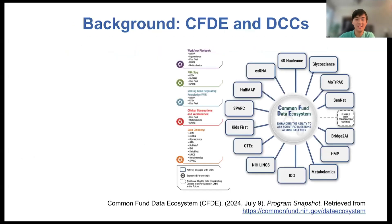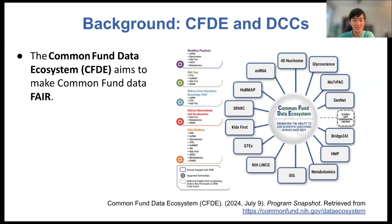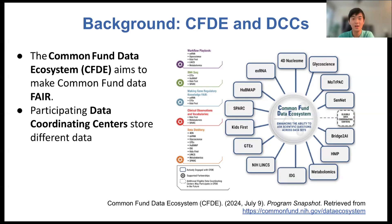Let's start with a little bit of background on the CFDE as well as their data coordinating centers. The Common Fund Data Ecosystem, or CFDE, is a part of the NIH Common Fund programs, and it's designed with the mission to make biomedical research knowledge generated from various Common Fund programs FAIR — that's findable, accessible, interoperable, and reusable. One of the key steps in this mission is to consolidate data across data coordinating centers, or DCCs, each of which stores a unique aspect of human genome research.